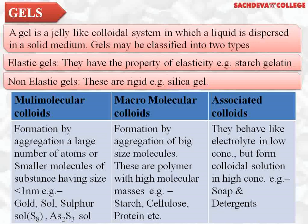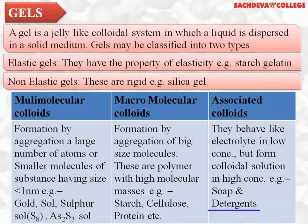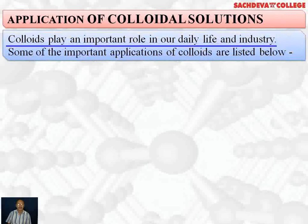Now, the difference between multi-molecular, macromolecular, and associated colloids: Multi-molecular colloids are formed by aggregation of a large number of atoms or smaller molecules having size less than 1 nanometer — for example, gold sol, sulfur sol, arsenic sulfide sol. Macromolecular colloids are formed by aggregation of big-size molecules; these are polymers with high molecular masses — for example, starch, cellulose, protein. Associated colloids behave like electrolytes at low concentration but form colloidal solutions at high concentration — for example, soaps and detergents.